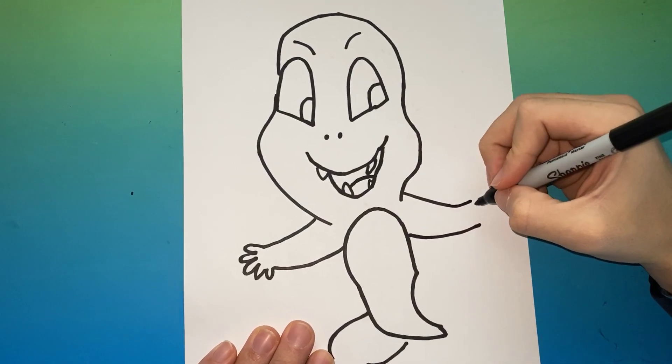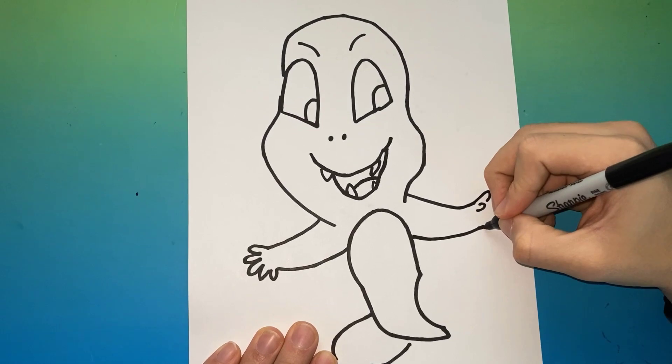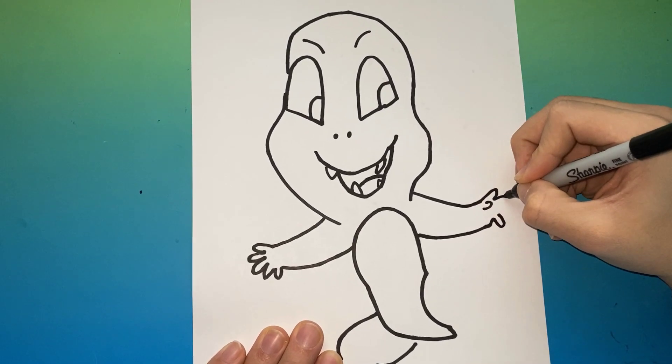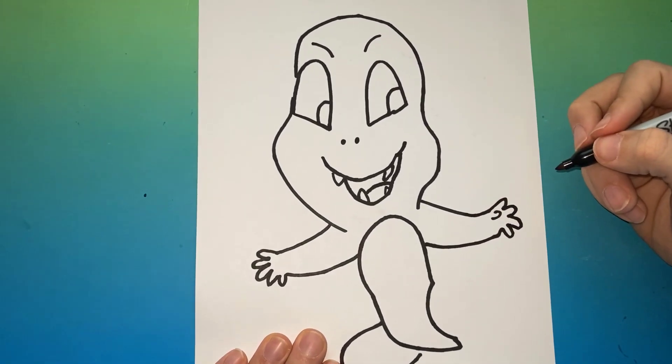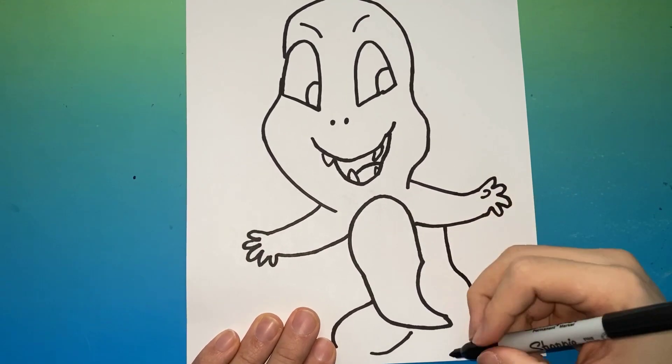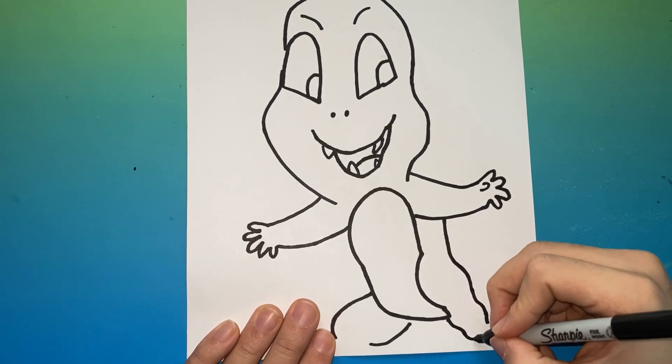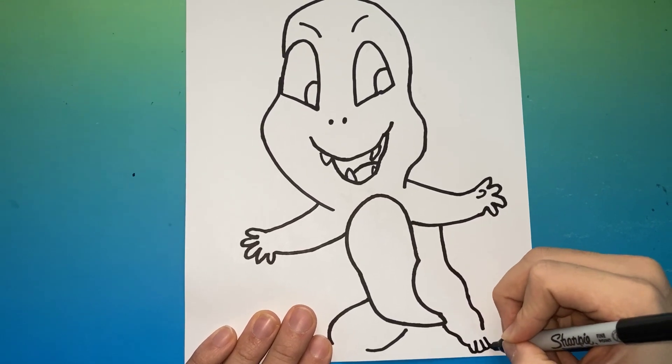Now we're gonna make that line. We're gonna give him a tail in just a moment, but we're gonna give him some toes on the left as well. Now you're gonna draw a line extending all the way up right there as well.